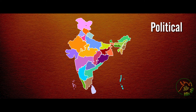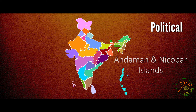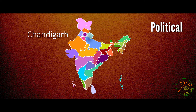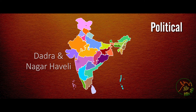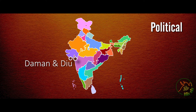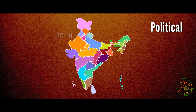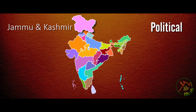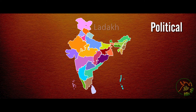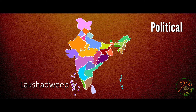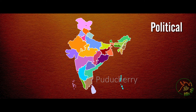Now we shall check out the eight union territories: Andaman and Nicobar Islands, Chandigarh, Dadra and Nagar Haveli, and Daman and Diu, Delhi, Jammu and Kashmir, Ladakh, Lakshadweep, and Puducherry.